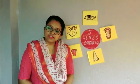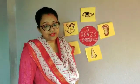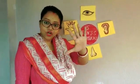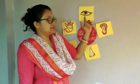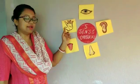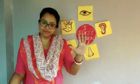Dear students, today I will discuss with you about DSO. Do you know what is DSO? DSO means Definition of Sense Organs. All of you know that we have five sense organs: eyes, ears, nose, tongue, and skin.